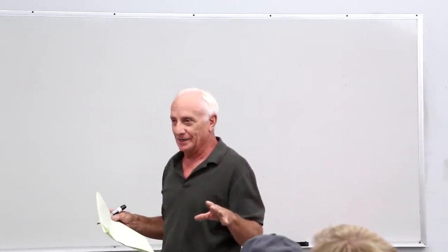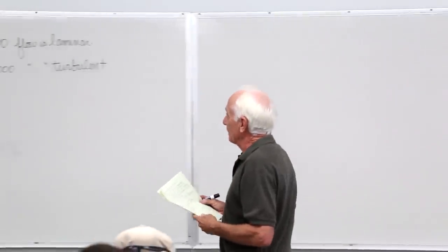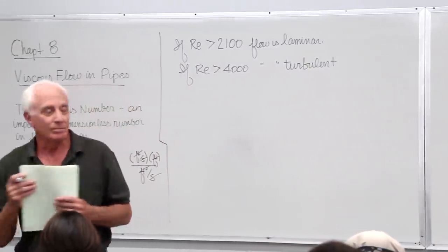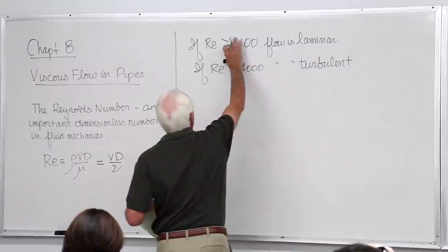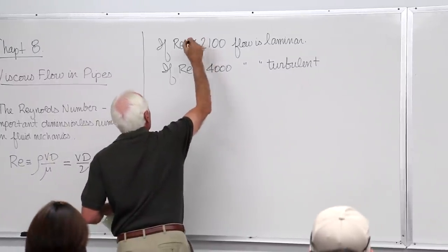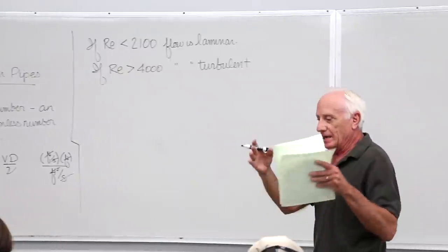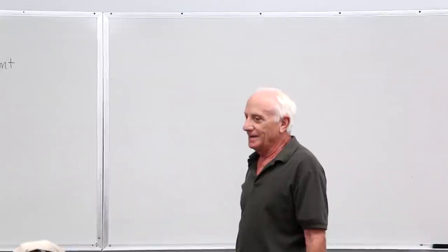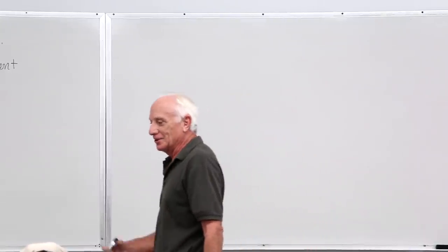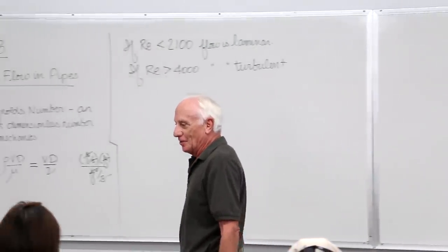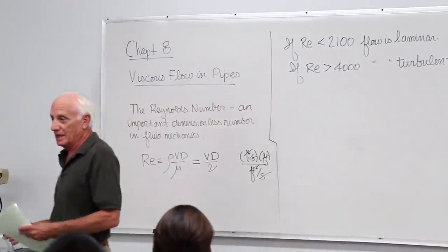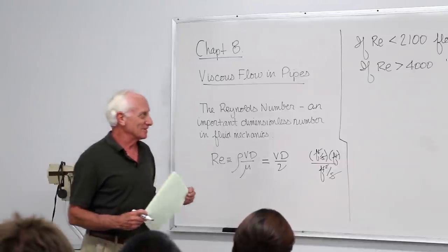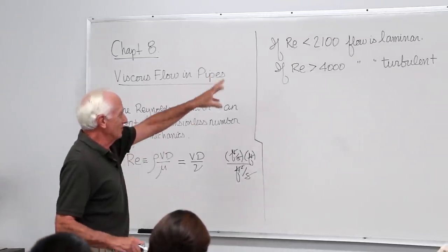Between 2,100 and 4,000, it's a transition zone — called the critical region — where sometimes we don't know if the flow is laminar or turbulent. We'll discuss that next Monday. So for right now there are two main zones.